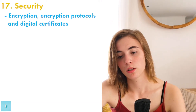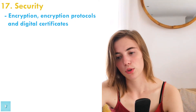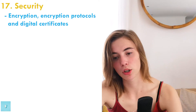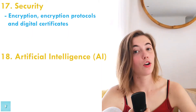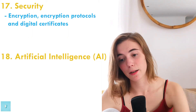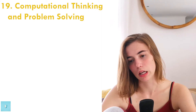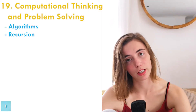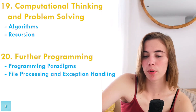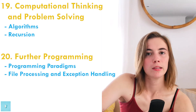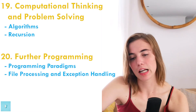If you're watching this before the AS level video, go watch that one first and then come back. Number 17 is security — encryption protocols and digital certificates related to over-the-air communication. Number 18 is artificial intelligence (AI). Number 19 is computational thinking and problem solving — algorithms and recursion. And number 20 is further programming — programming paradigms, file processing, and exception handling.